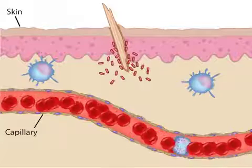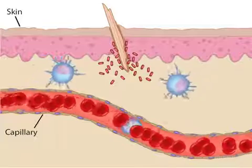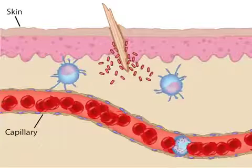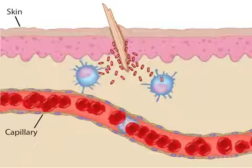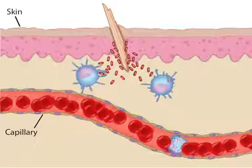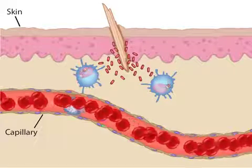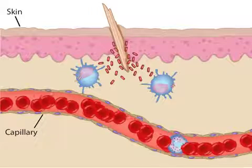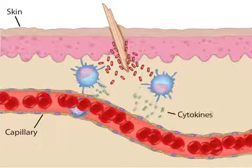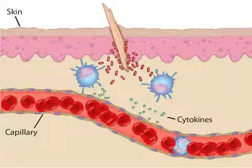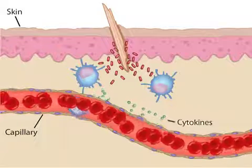Resident immune cells called macrophages may wander into the infected area and engulf the invading organisms. The macrophages digest the material and in this way help clean up the infection. In response to the infection, macrophages release a number of chemicals including those called cytokines. Cytokines are small proteins that regulate the immune response.